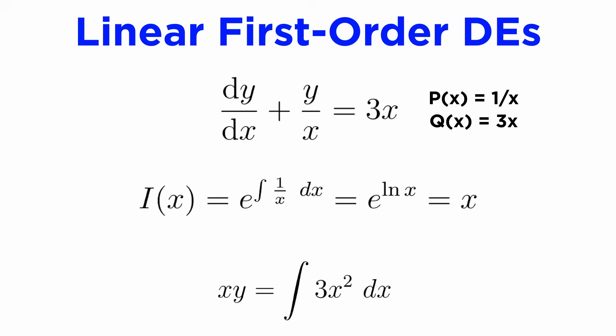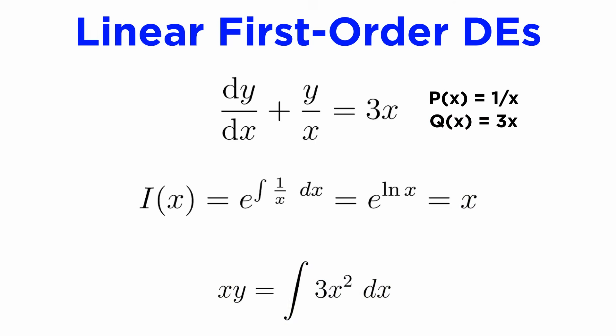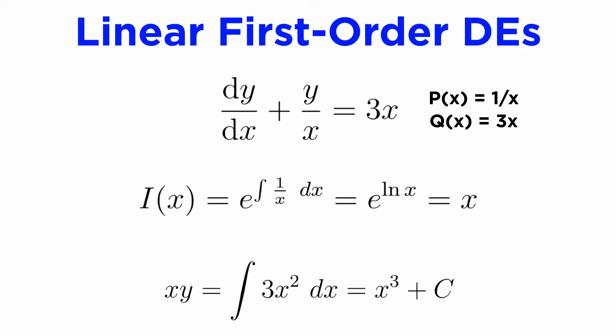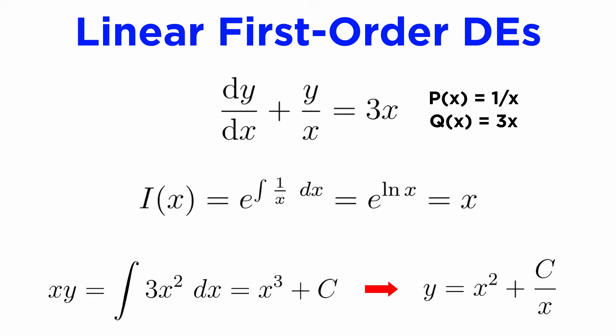We can now use the formula i·y equals the integral of i·q. We get x times y equals the integral of 3x squared dx. Evaluating the integral using the power rule gives us x cubed plus c, which leads to our general solution. If we were given boundary conditions, we would put them in now to find the value of c, but this time we aren't given any, so let's rearrange for y to get our explicit general solution: y equals x squared plus c over x.